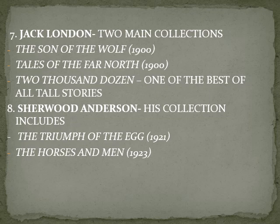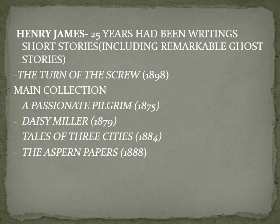The eighth American writer is Sherwood Anderson. His collections include Triumph of the Egg, 1921, and Horses and Men, 1923, which is considered his best collection. We also cannot forget Henry James, another very important short story writer.